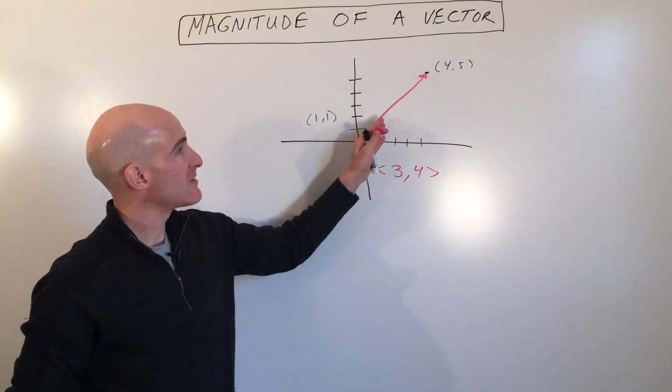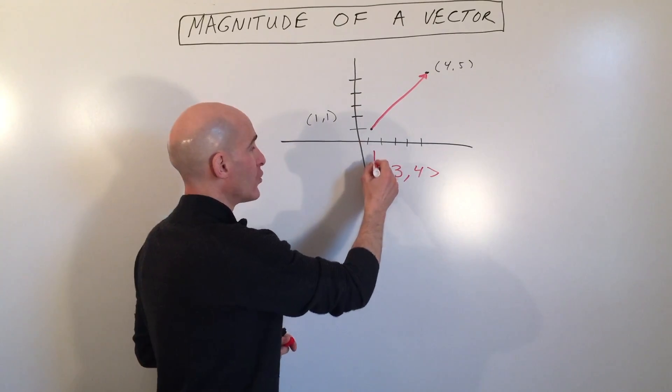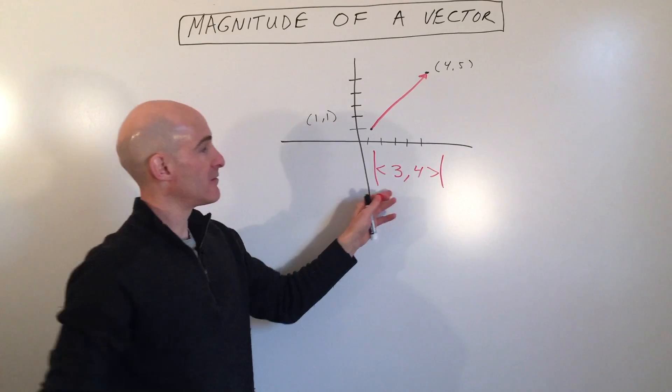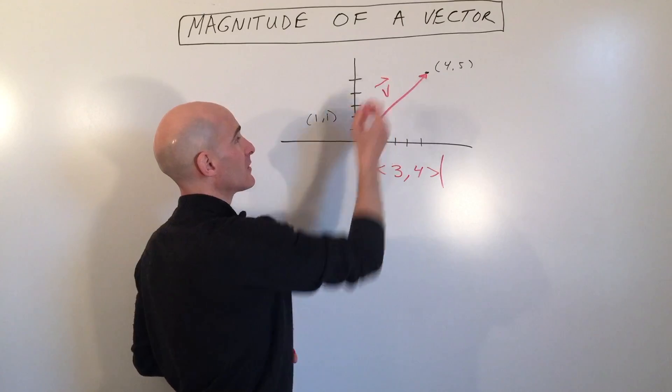But if we want to find the magnitude represented by the length of the vector, also denoted by these bars right here, this represents the magnitude of this vector. We'll just call it vector V.